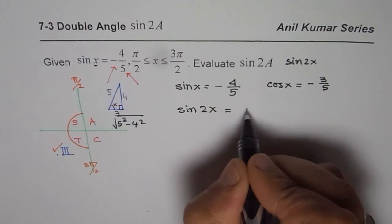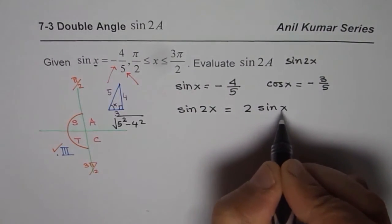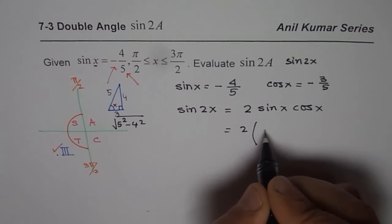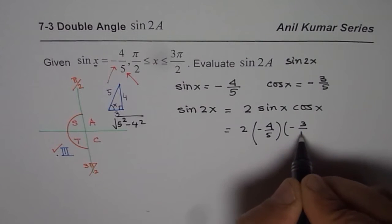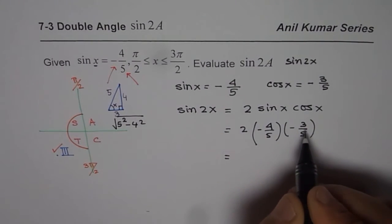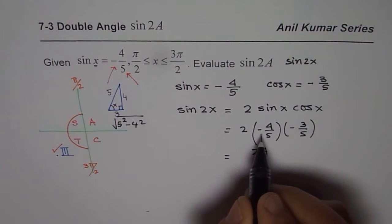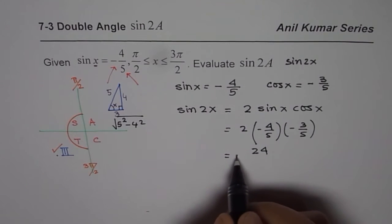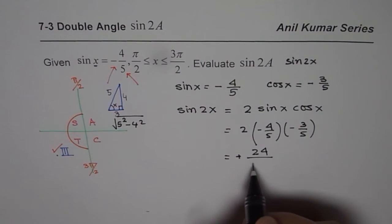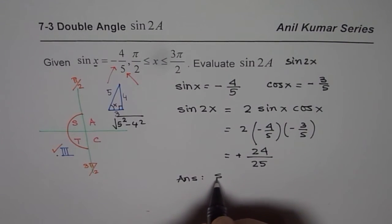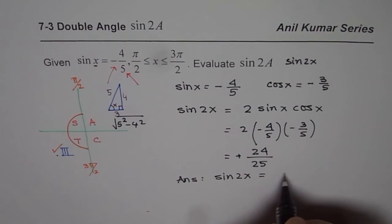We know sine of 2x is 2 times sine x cosine x. So we can substitute the above values and then calculate. We have minus 4 over 5 times minus 3 over 5. So that gives us 3 times 4 as 12, 12 times 2 is 24. As far as the sign is concerned, negative times negative is positive. And 5 times 5 is 25.